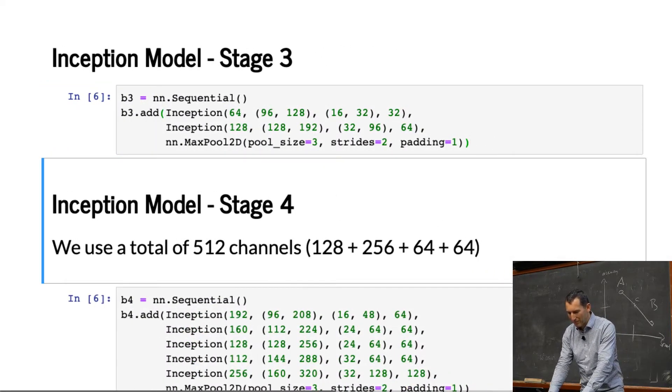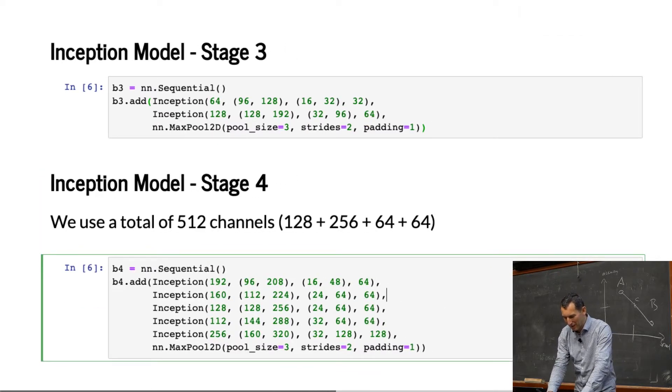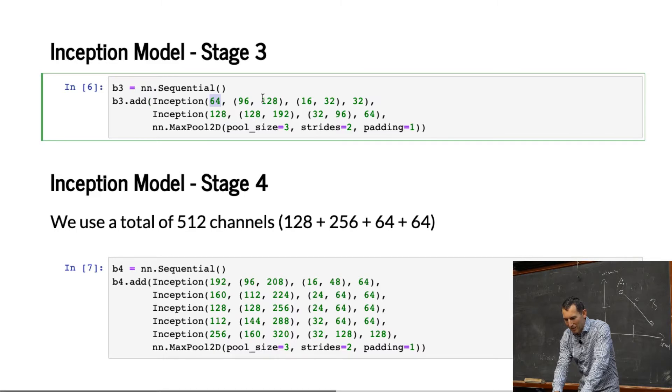Stage 3, well, that's two inception blocks now, followed by max pooling. Stage 4, well, some more of it. And now let's look at the actual numbers. These last numbers are the output channel dimensionalities for each of those paths, right? See how they increase.